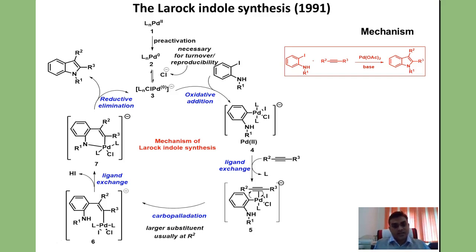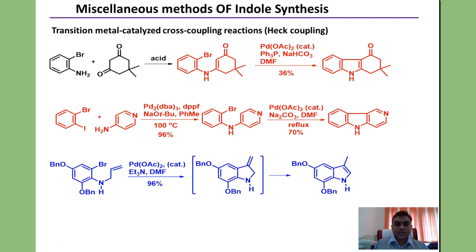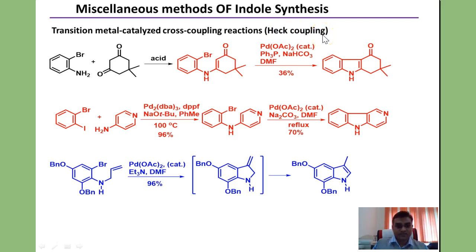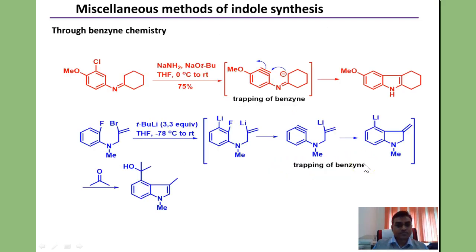The Larock mechanism provides an opportunity to revise key concepts in organometallic chemistry, and students should practice writing it. Additionally, there are classic examples of other transition metal catalyzed indole syntheses: an enamine formed from ortho-bromoaniline with diaminobutanedione undergoes palladium-catalyzed C-C coupling in a Heck-type reaction; nitrogen-carbon coupling with palladium is also observed, followed by carbon-carbon bond forming reactions through palladium insertion.